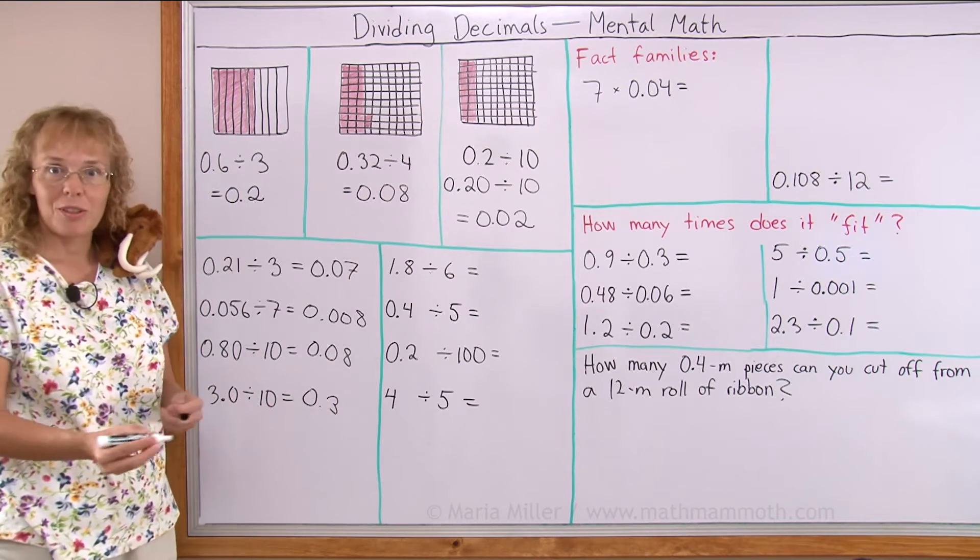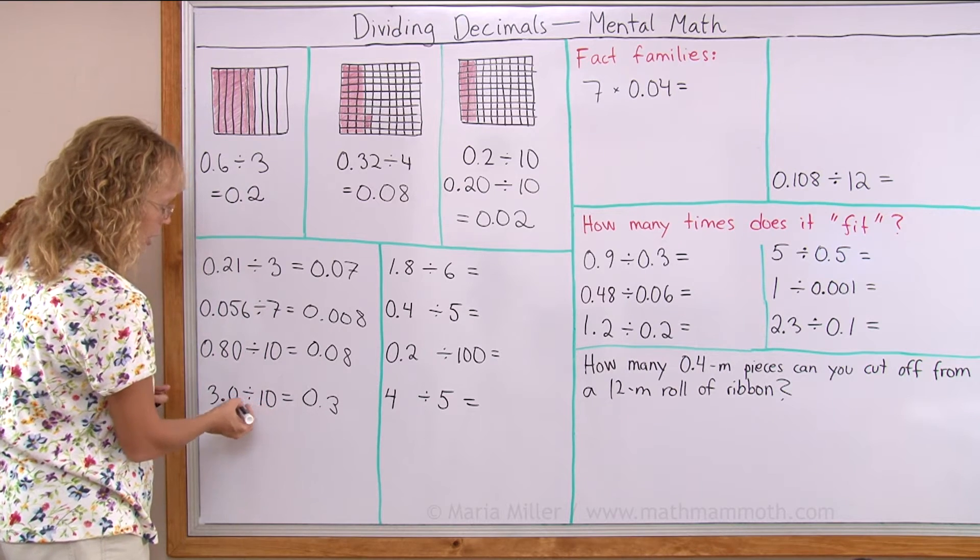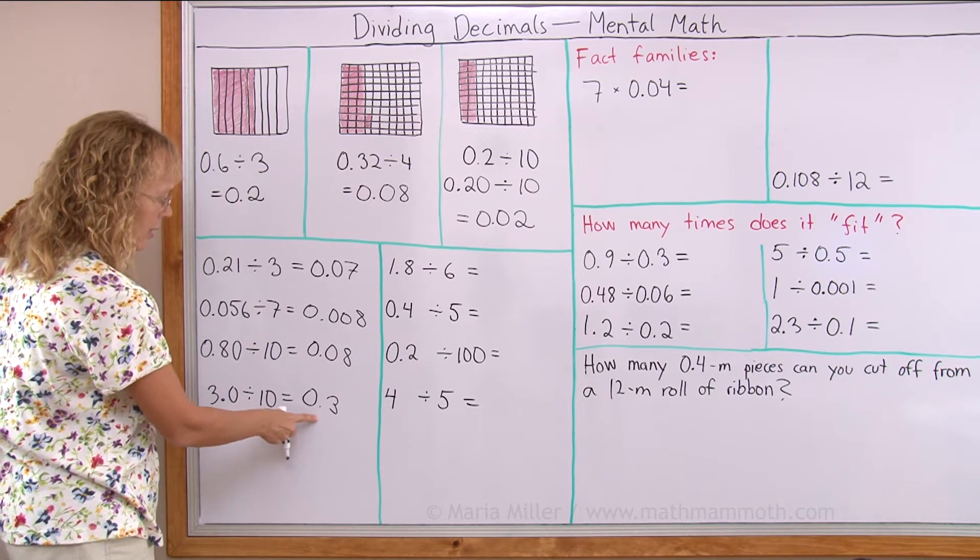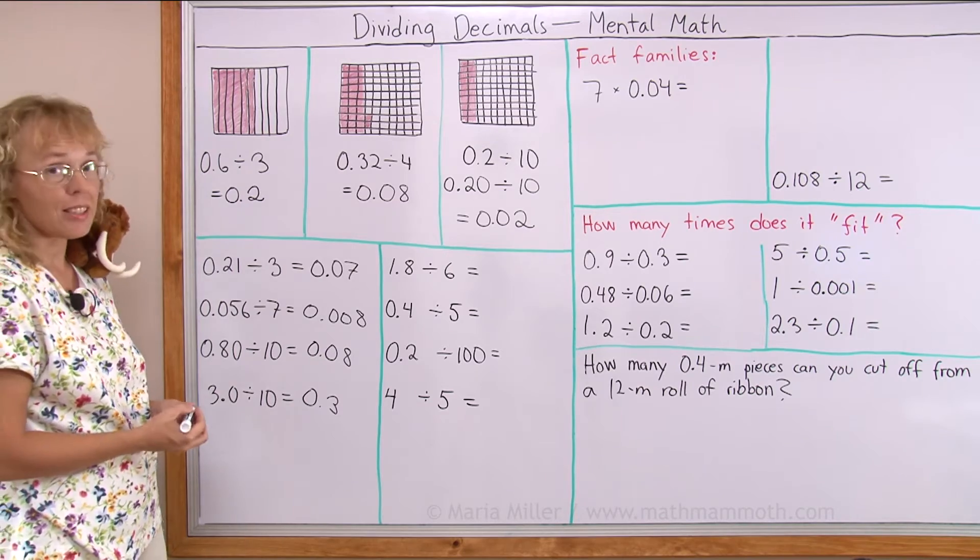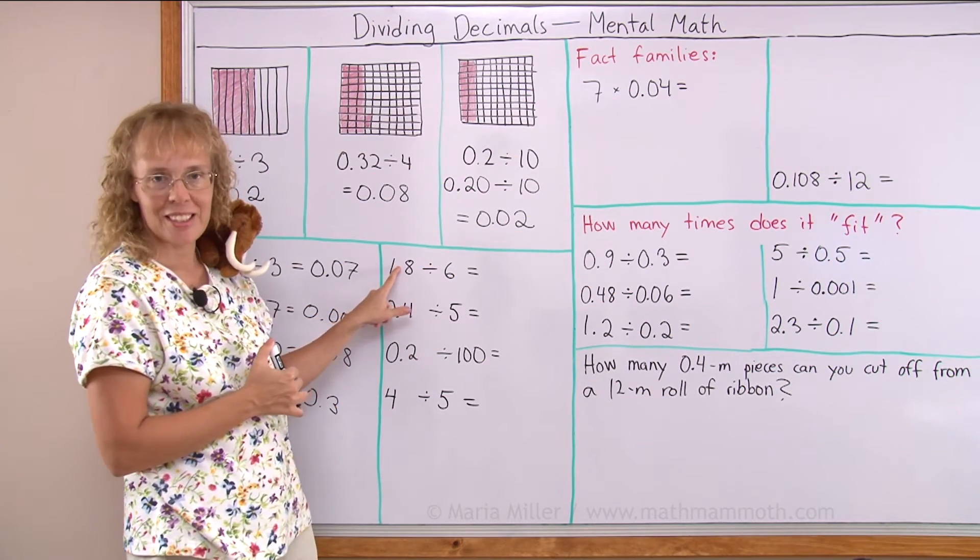And by the way, you remember, you can check all this by multiplying. This times this has to equal this. Three tenths times ten has to equal three. Okay? And it does.